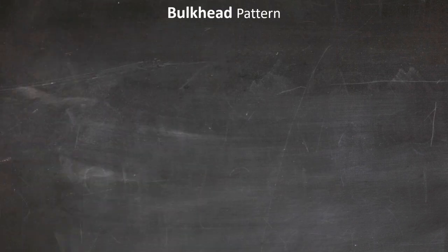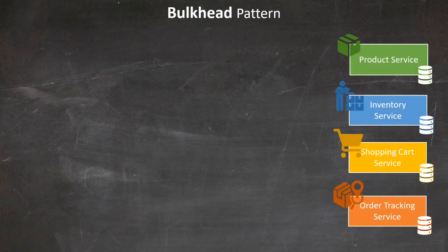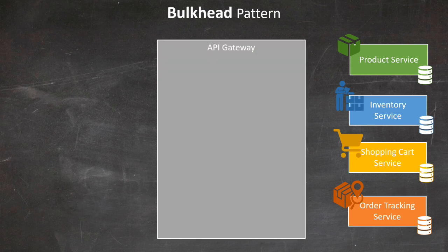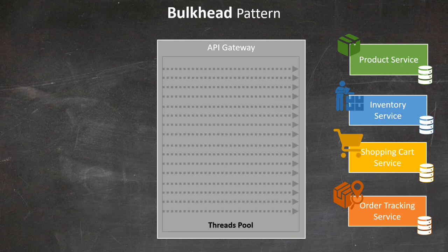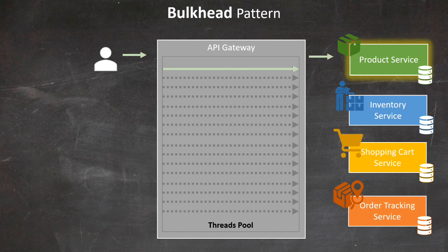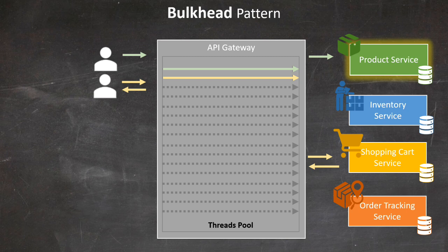Let's explore the bulkhead pattern and the problem it aims to solve. In our e-commerce microservices architecture, at the front we have an API gateway that routes incoming requests to various services. This API gateway has a thread pool to handle user requests — a pool that physically limits the number of concurrent users our system can manage. Now consider a scenario where our product service is experiencing issues and running very slowly. A user sends a payment request, which gets processed normally. Another user's shopping cart request is also handled without issues.